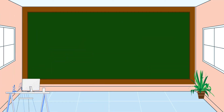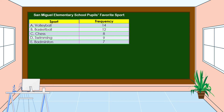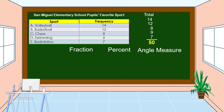Before we construct a pie graph, let's find the angle measure for each category. To do it, we first find the total respondents by adding 14, 12, 8, 9, and 7, which equals 50. Next, we find how many percent each sport represents. From the fraction, we change it to percent, then from percent to decimal. To get the angle measure, we multiply by 360 degrees, since 360 degrees is the total angle measurement of a circle.